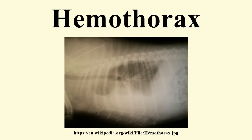Chest radiography is the preferred means of initial diagnosis for haemothorax. Upright radiography is preferred, but supine films may be taken when upright radiography is not feasible. Tube thoracostomy may be done prior to imaging when patients have sustained blunt or penetrating thoracic trauma and display unstable hemodynamics, have respiratory failure with absent or decreased breath sounds, show tracheal deviation, or have serious penetrating injuries.